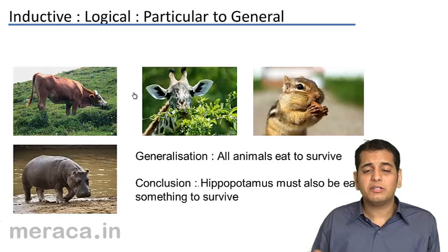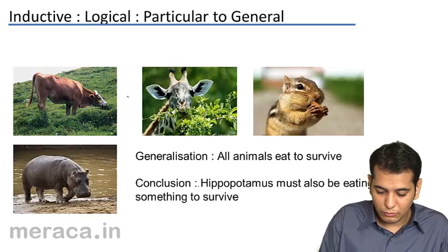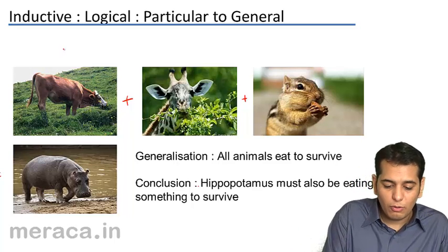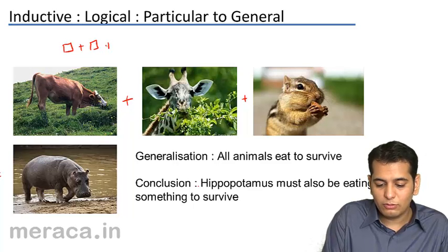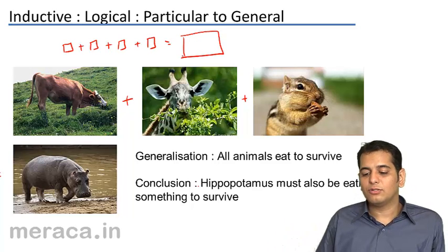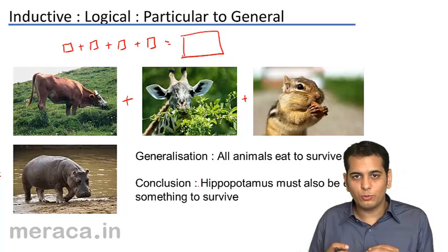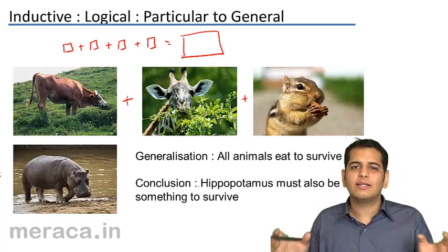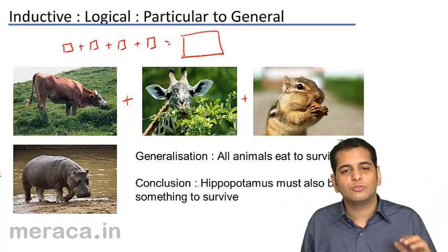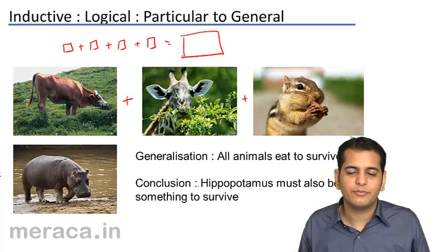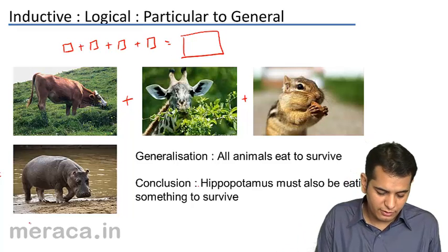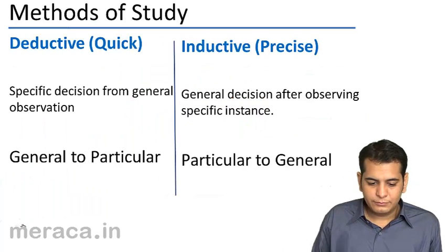In this method, I keep adding and including all particular individual examples, and then I draw a generalization from them. I go from particular to general — collecting all individual examples and then drawing a conclusion. This is the inductive method, where we go from particular to general.